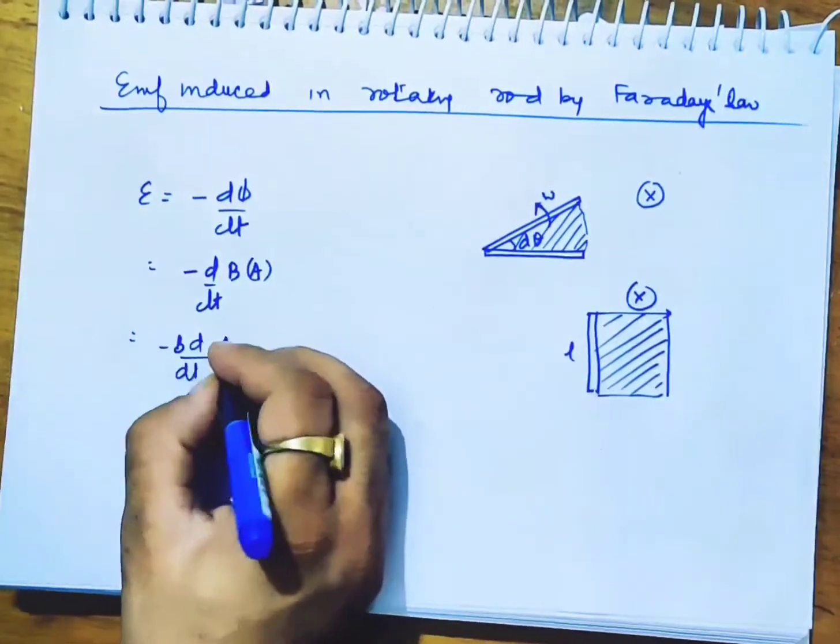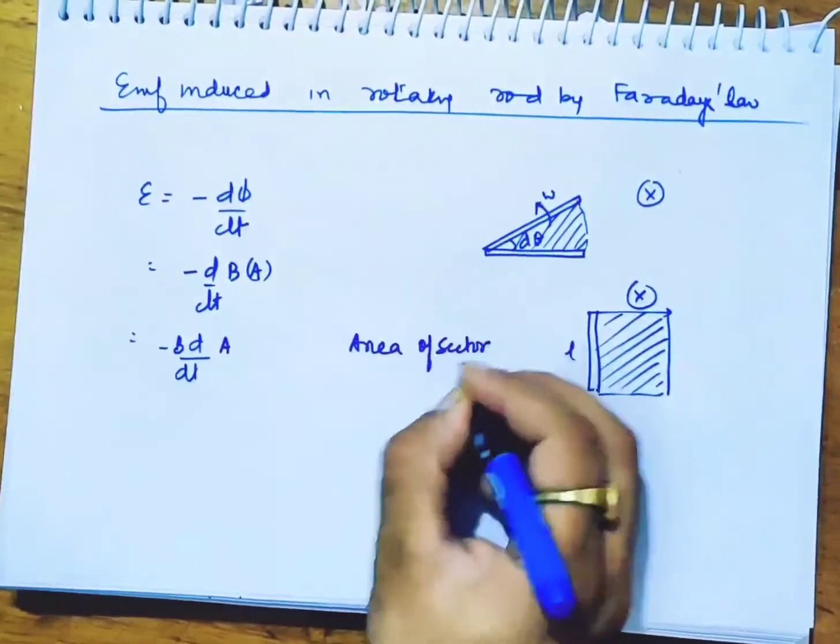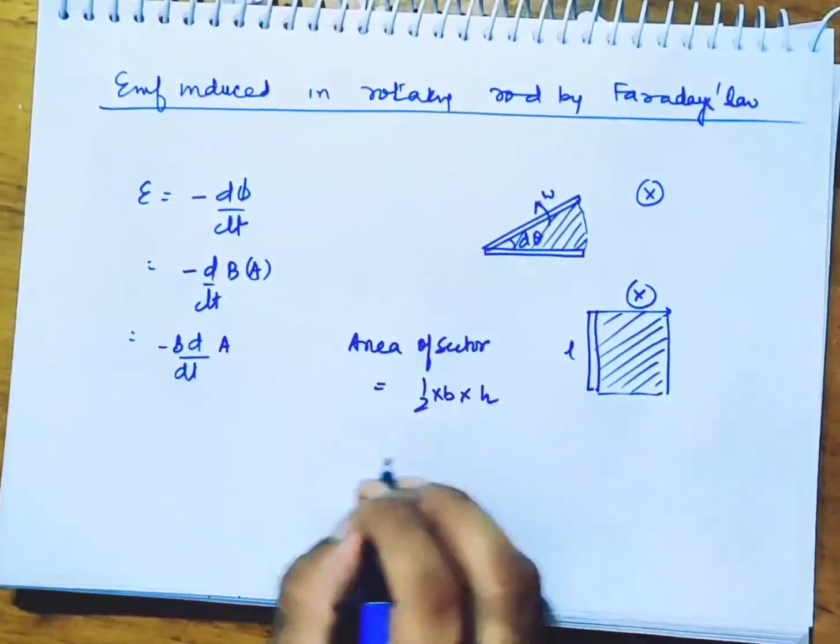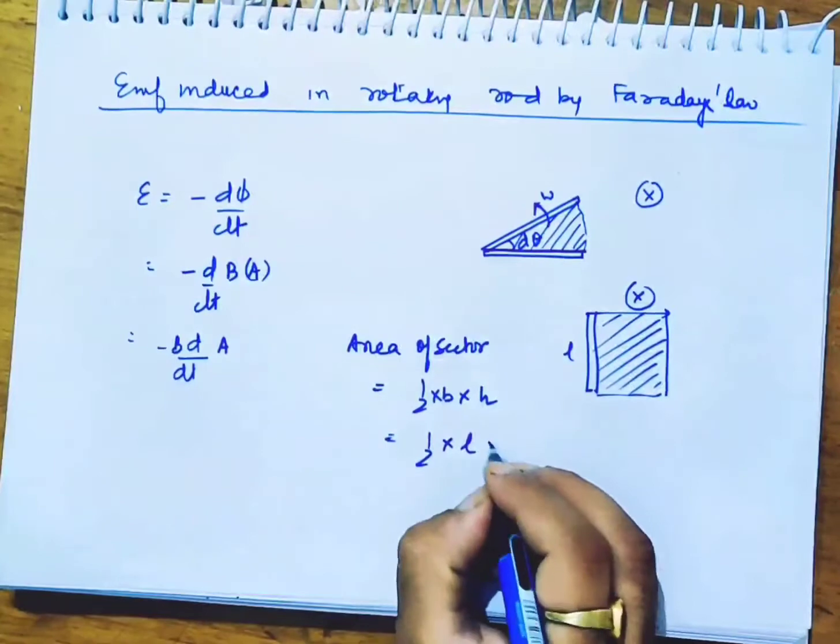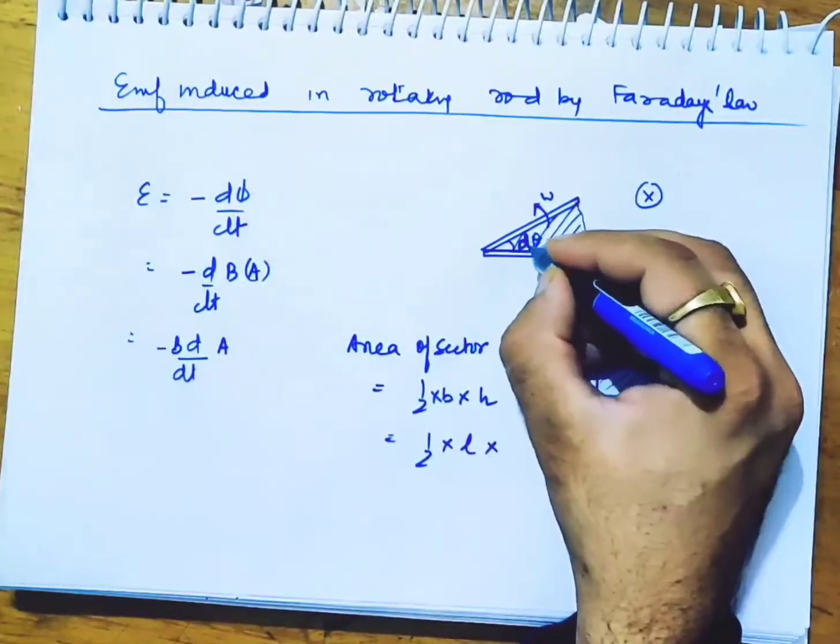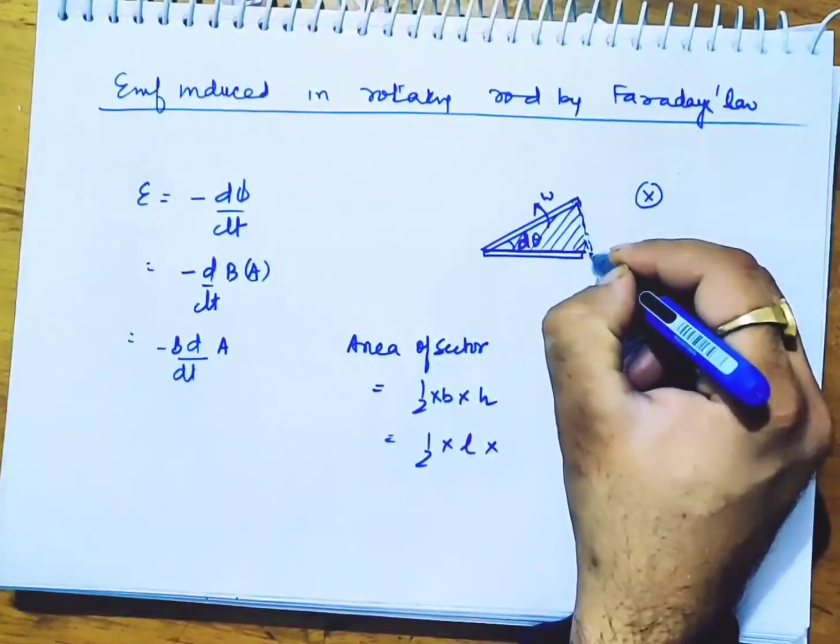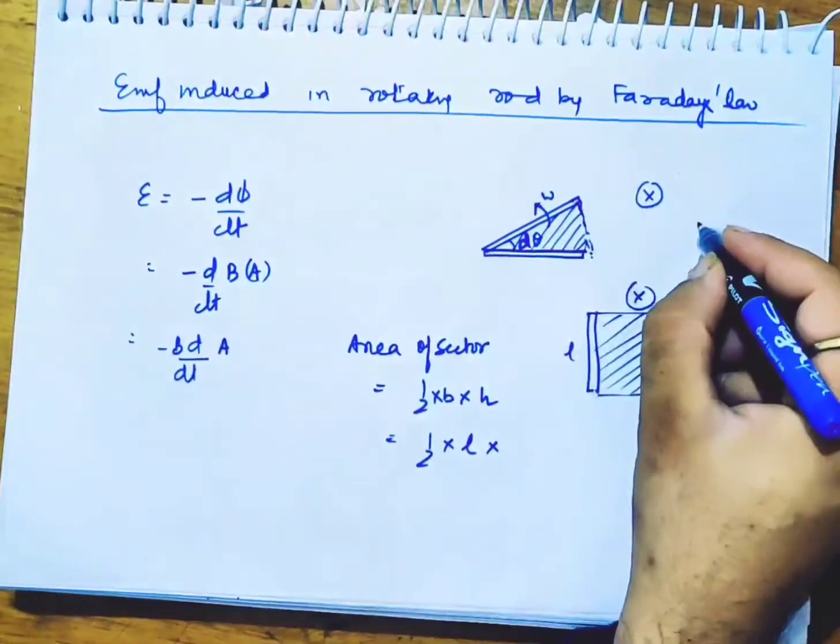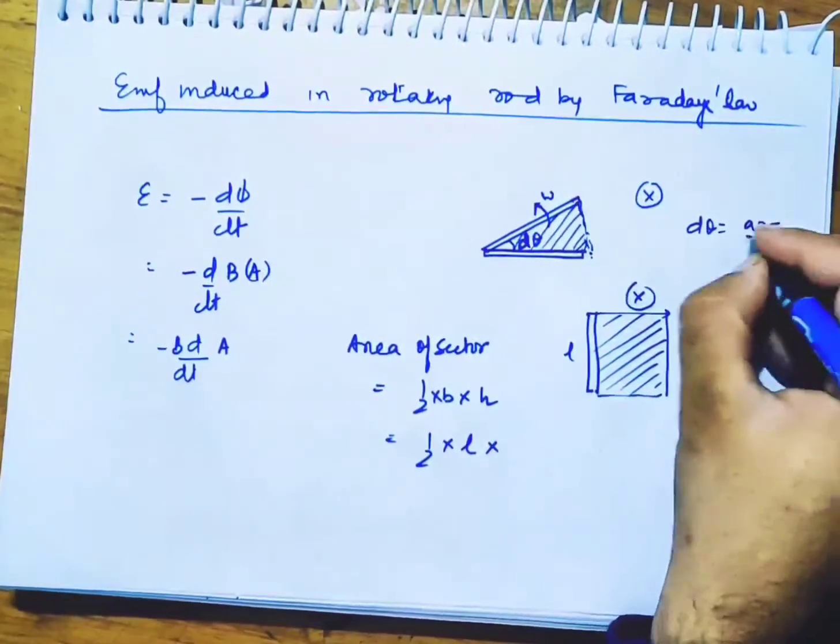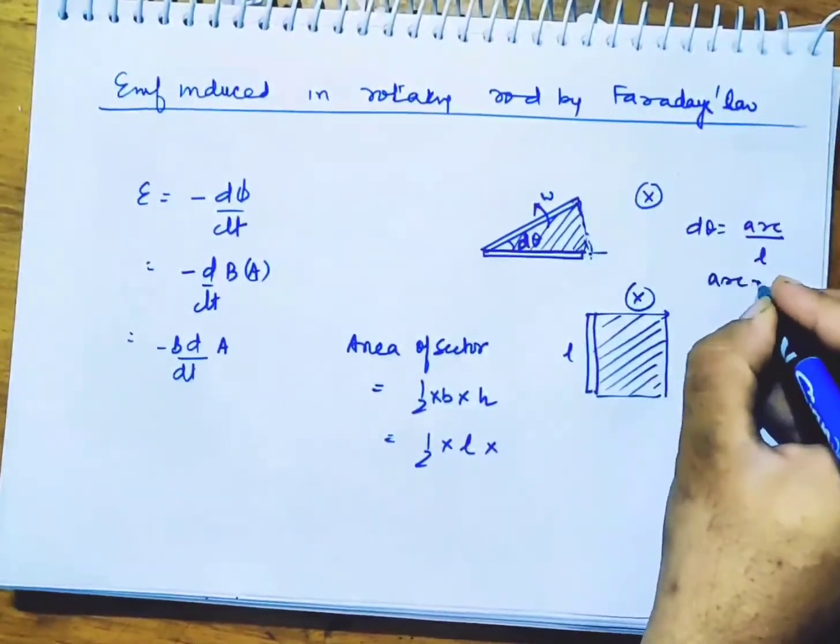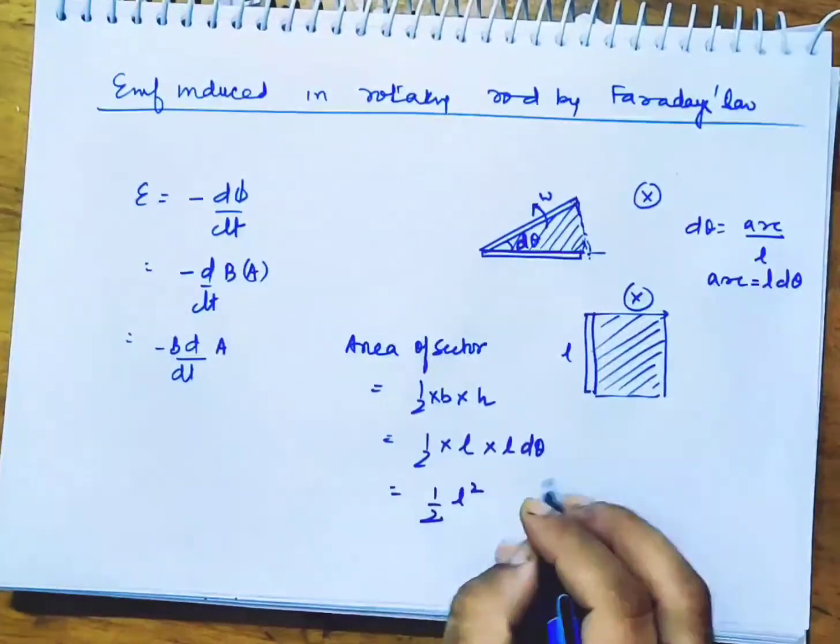The area of sector is given by half into base into height. Here the base is the radius, that is length, and height - because it is a small angle d theta - is almost straight. The arc length equals arc upon radius. Radius is L, so the arc is L d theta.